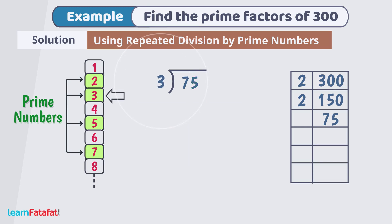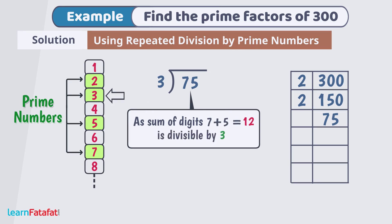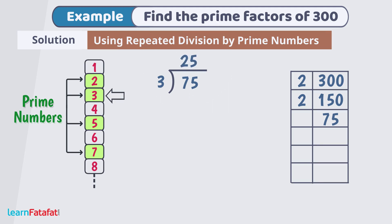Next prime number is 3. Since sum of digits of 75 is 7 plus 5 equals to 12 which is divisible by 3. So, 75 is also divisible by 3. On division, we get quotient 25. Write 3 here and 25 here.